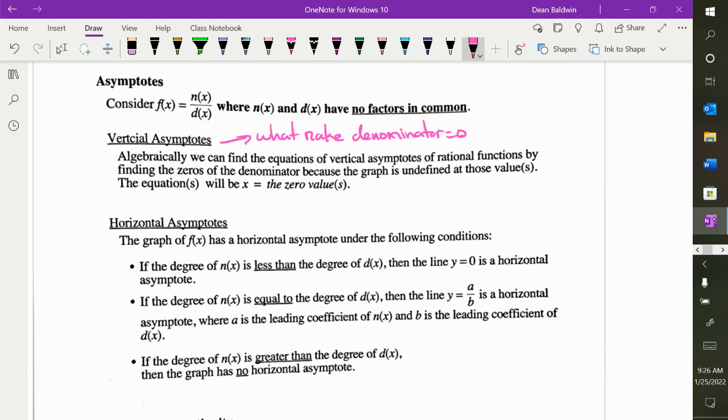Therefore, if the degree of the numerator, the top, is less than the degree of the denominator, it's y is equal to zero. For example, if I have x squared over 3x cubed plus one, the degree of the top is two, the degree of the bottom is three, therefore your HA is y is equal to zero.